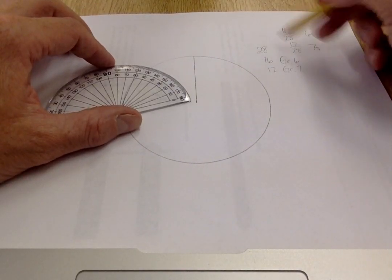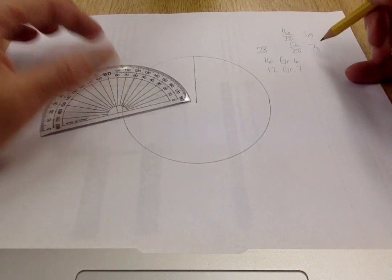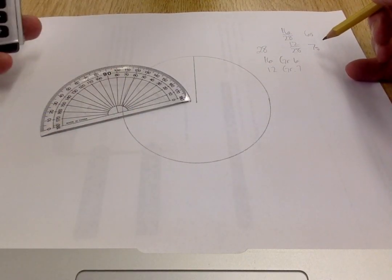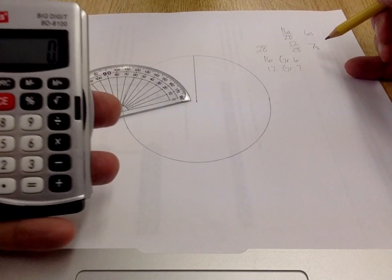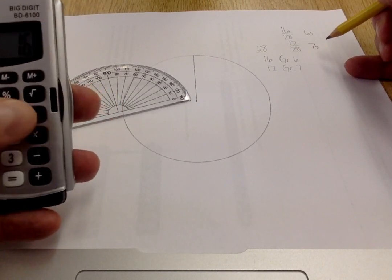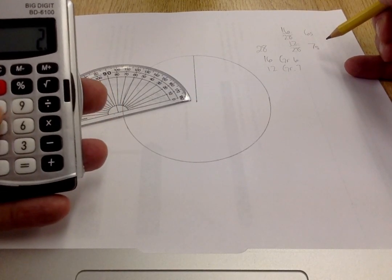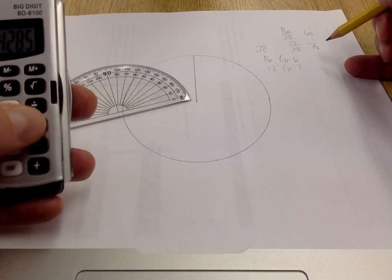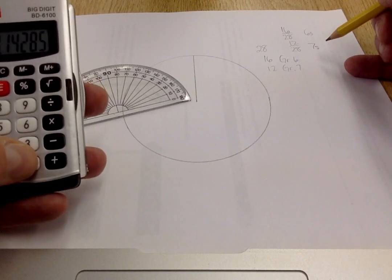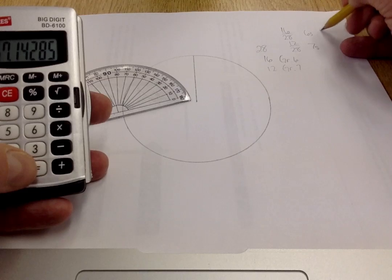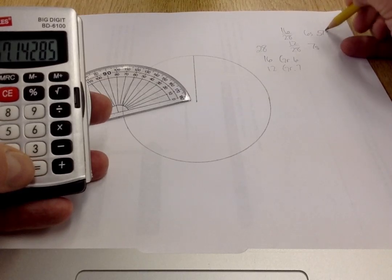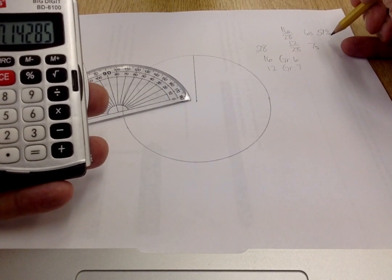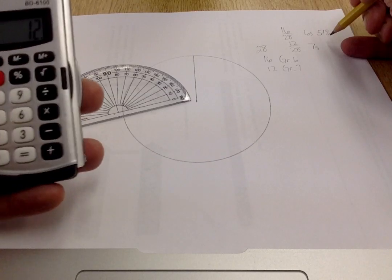I need to find the percentages of these, so I take my calculator and I do 16 divided by 28 equals 57, and I'm going to multiply that by 100 to give me roughly 57%.